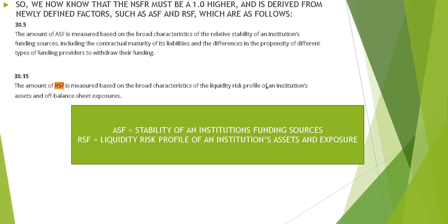Now that we know about the ASF and RSF and that the ratio must be 1.0 or higher, here's a reiteration: the ASF amount is measured based on the broad characteristics of the relative stability of an institution's funding sources, including the contractual maturity of its liabilities and the propensity of different types of funding providers to withdraw their funding. The RSF amount is measured based on the broad characteristics of the liquidity risk profile of an institution's assets and off-balance-sheet exposures. Essentially, they're trying to identify who's in trouble and take corrective action as necessary.